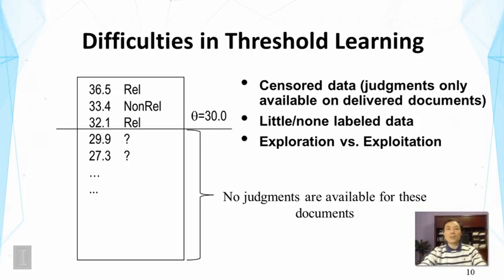Of course, we have a lot of documents for which we don't know the status because we have never delivered them to the user. As you can see here, we only see the judgments of documents delivered to the user. This is not a random sample. It's censored data. It's kind of biased. That creates some difficulty for learning.